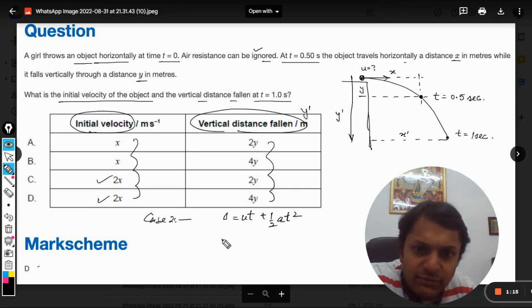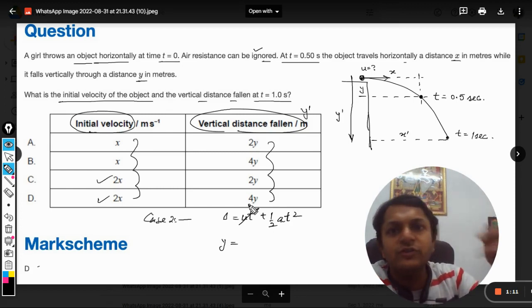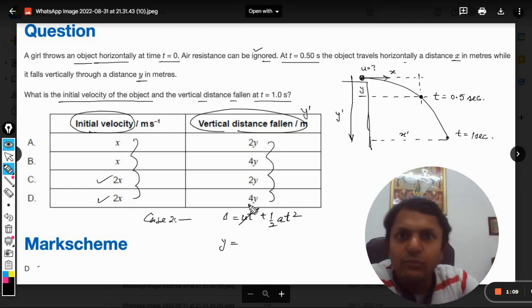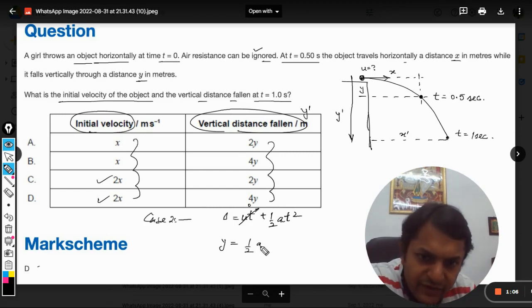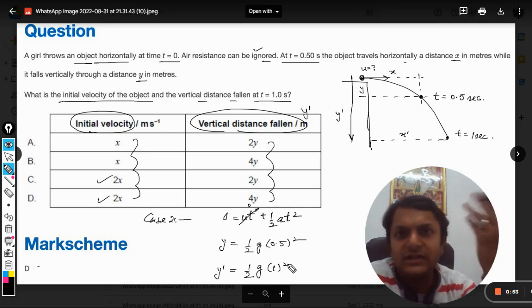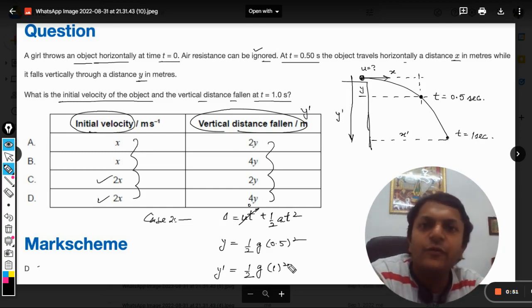In case number one, y is the distance, u is zero because in both cases for the vertical motion u is zero. So it will be half g t squared. And y dash can be taken as half g t squared with t equals one second.